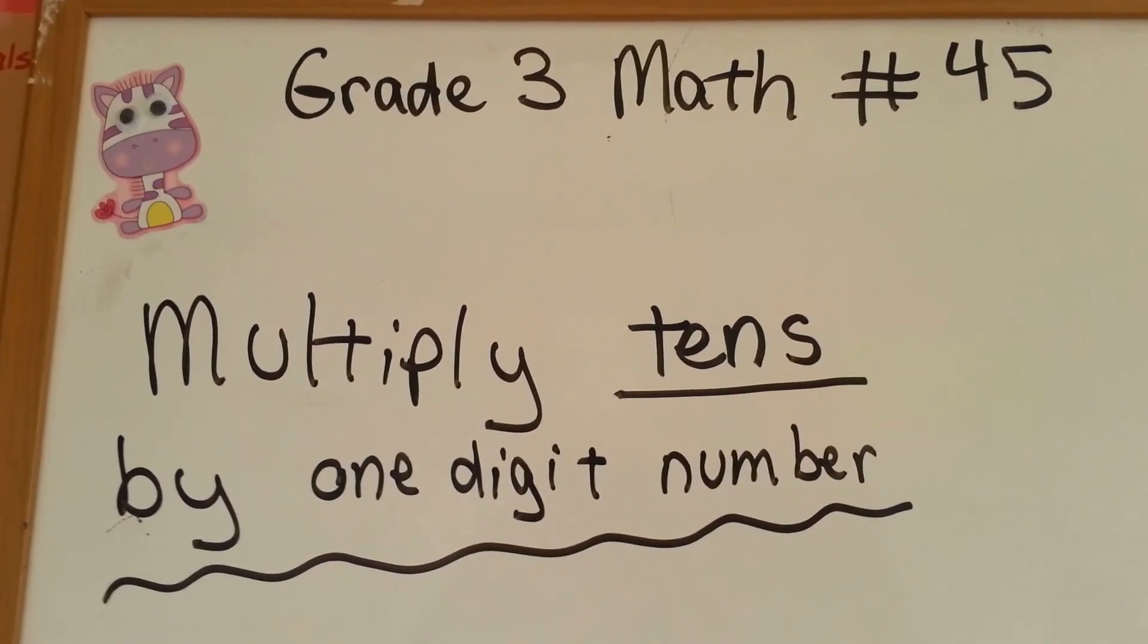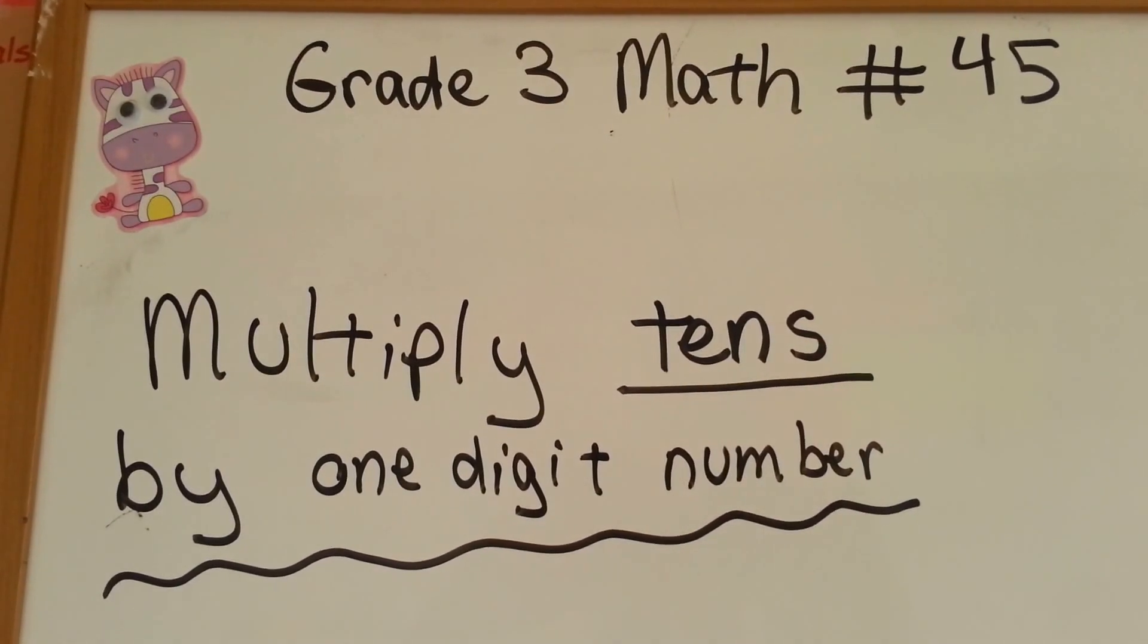Grade 3 math, number 45. Multiply tens by a one-digit number.